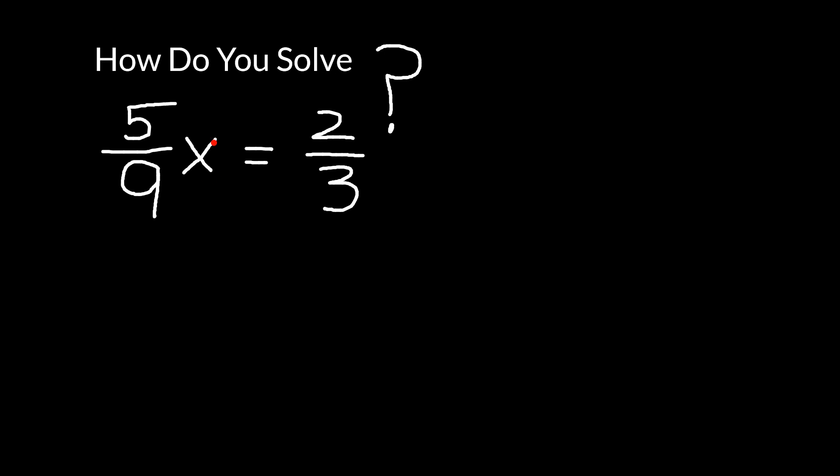Solving something like this means we need to find the value of x which makes it true. So five ninths of some number x is equal to two thirds.